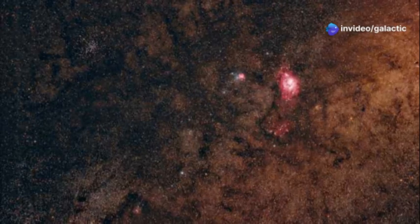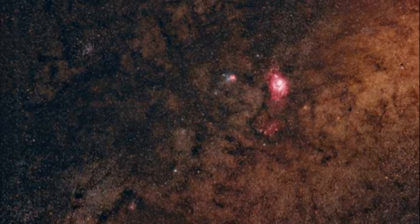Despite its enormous size, Betelgeuse is significantly cooler than the sun, hence its reddish appearance. This coolness is a consequence of its advanced age and the processes unfolding within its core.